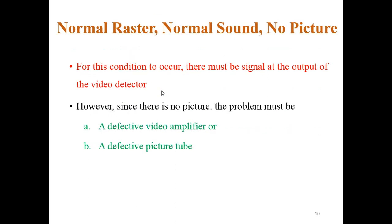Next is normal raster, normal sound, no picture. For this condition there must be signal at the output of the video detector because we are getting the normal sound. The raster is normal means from the video detector the output is not coming. Since no picture, then the problem must be in the video amplifier or in the picture tube.